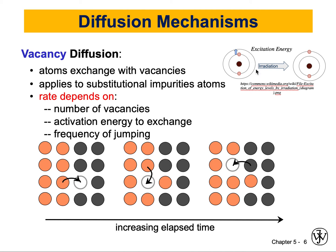Excitation energy happens for electrons inside one atom. If we expose an atom to radiation, the electrons around the nucleus will move to a higher orbit — the electron is then in an excited, unstable state and wants to return to its original place. When it returns after excitation, it will emit radiation. This is excitation energy, and it happens within an atom.